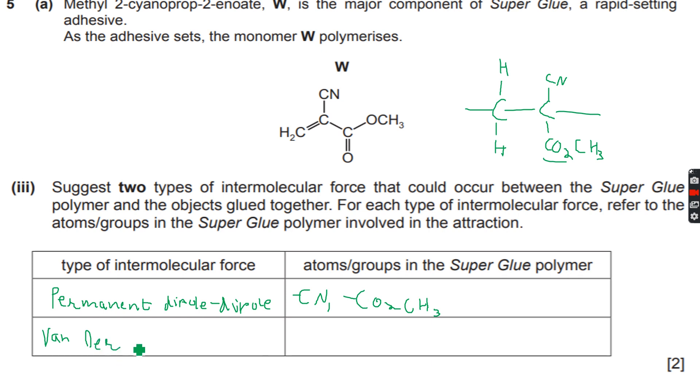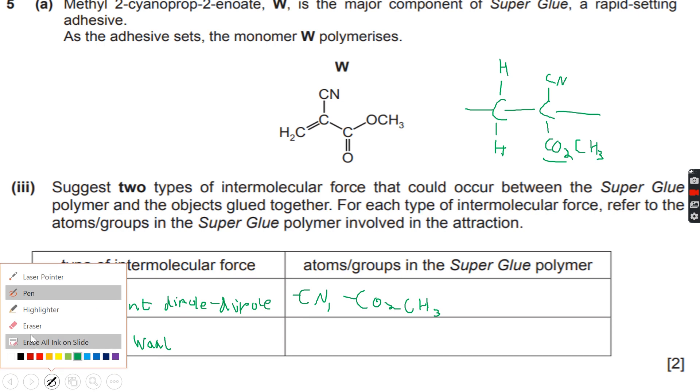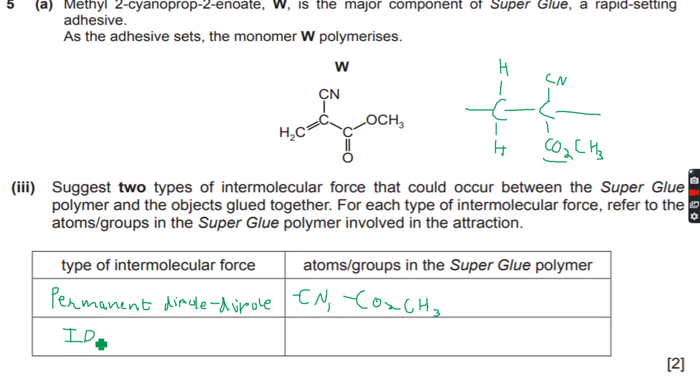So van der Waals forces - since permanent dipole-dipole is also van der Waals, it's wrong to write van der Waals. We can write ID-ID forces, which are instantaneous dipole-induced dipole forces. So these ID-ID forces will result because of the main polymer chain, which is the CH2 group, and it can also result because of CH3.